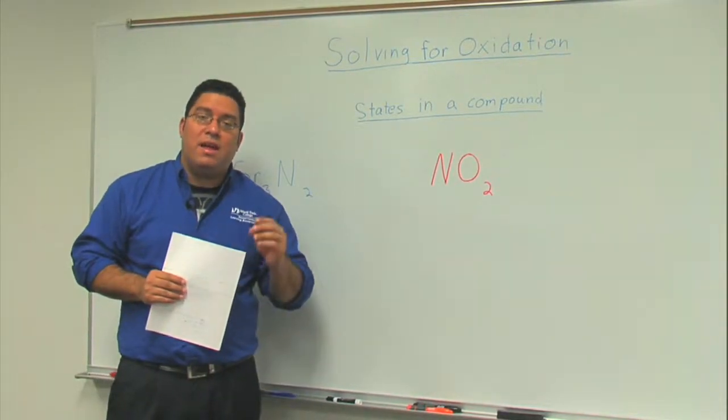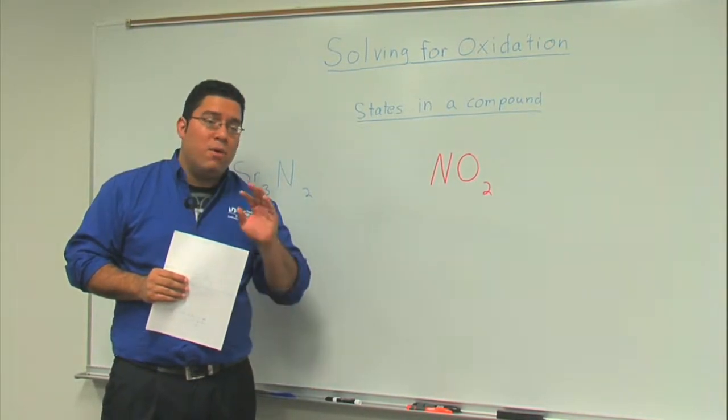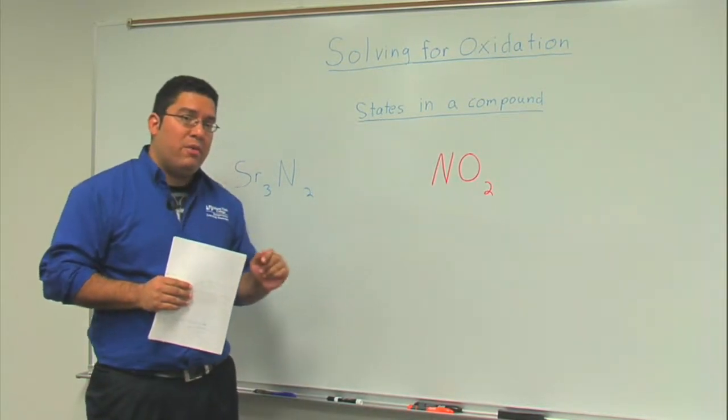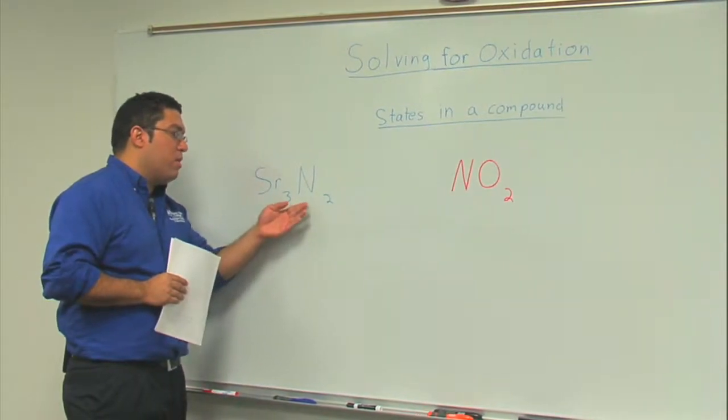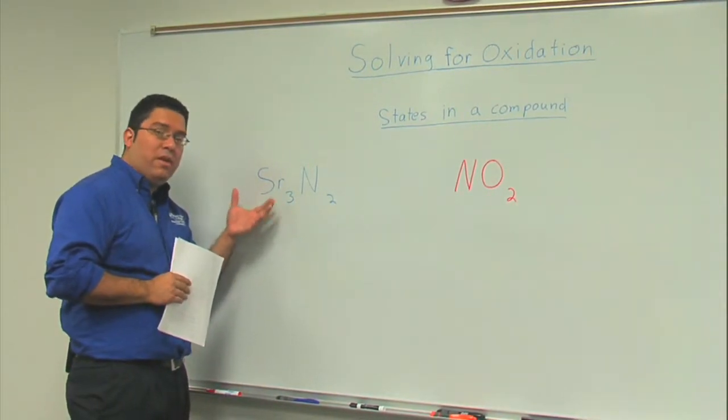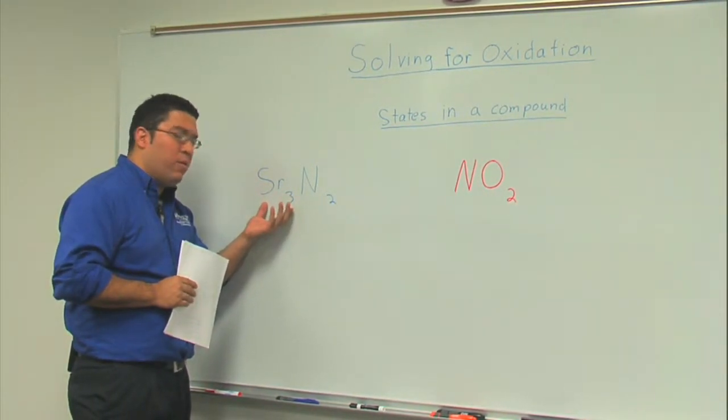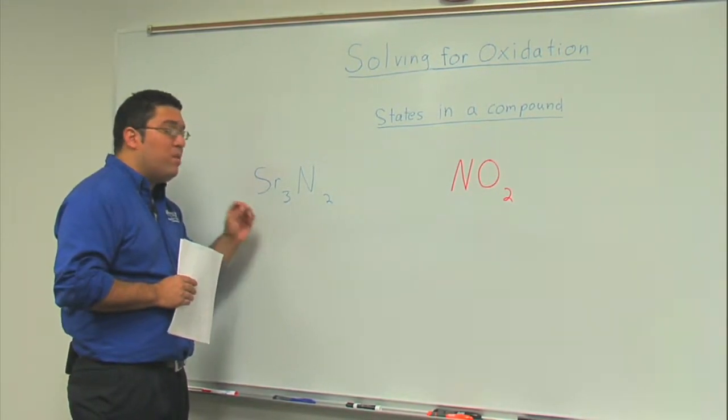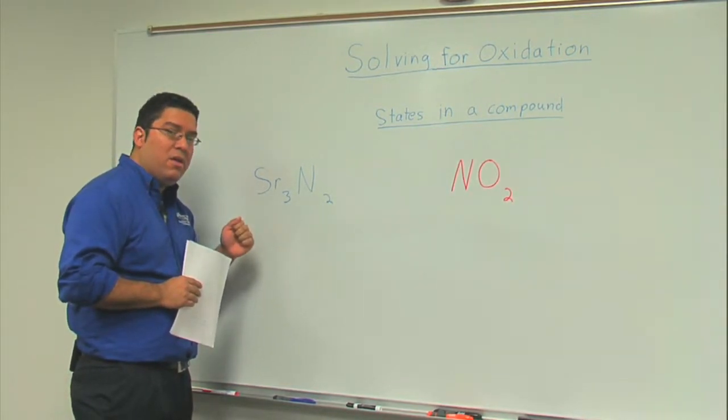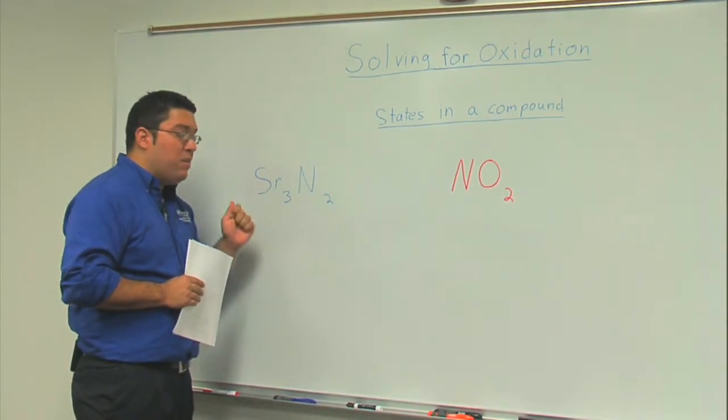Now that seems like a lot of rules to memorize, but when you first encounter a compound, let's say SR3N2, you shouldn't try to think of all those rules. The better approach is to ask yourself what type of compound do I have - is it ionic or is it covalent?